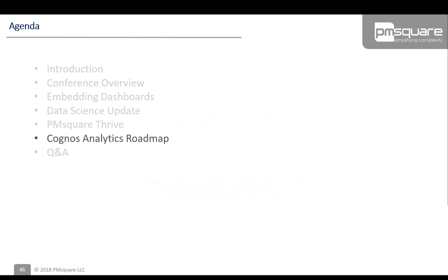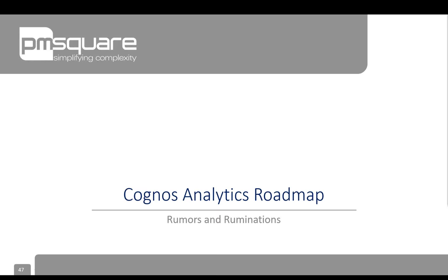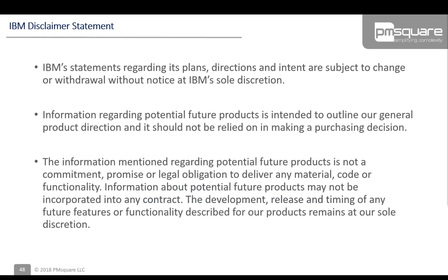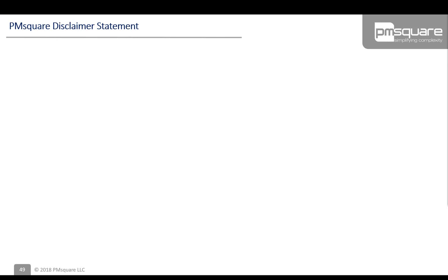Now we're at the Cognos Analytics roadmap — what we're going to call 'rumors and rumination,' meaning what may be upcoming in the product in the near future. IBM has shared their plans for what they're going to develop, but this stuff is all still under development. Just because something was shown at the conference doesn't mean it will materialize in that exact form. Generally from what we've seen in the past, many things shown in these roadmap sessions do show up, but a few things may not or may look a little different.